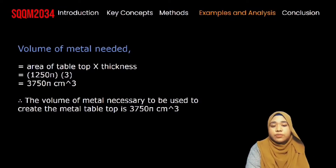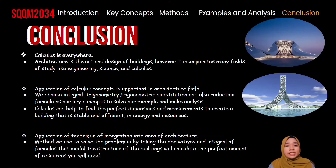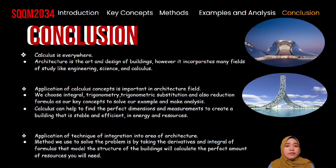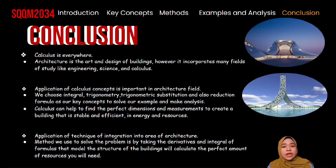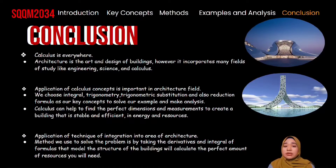The volume of metal necessary to create the metal table top is 3,755 cm³. In conclusion, calculus is everywhere. Wherever you go, whatever path you choose, you will still need calculus to solve your problems. The architecture field is the art and design of building, but it incorporates many fields of study such as engineering, science, and calculus. The application of calculus concepts, particularly integration, is important in the architecture field. This is all from us — thank you very much for listening and watching.